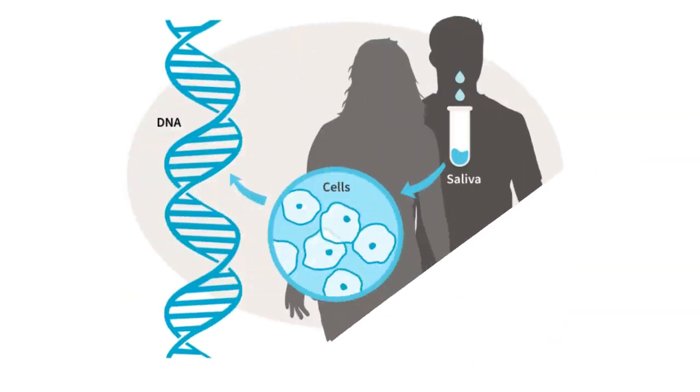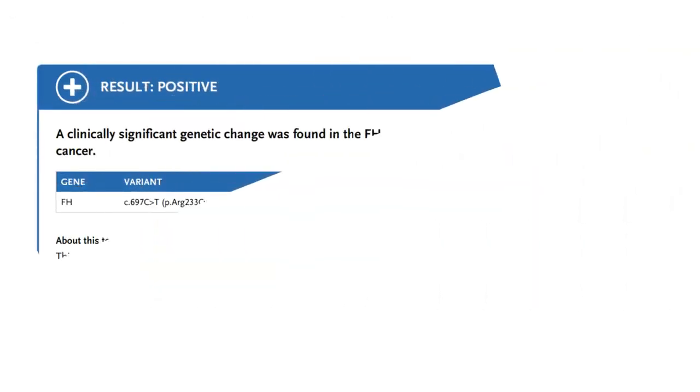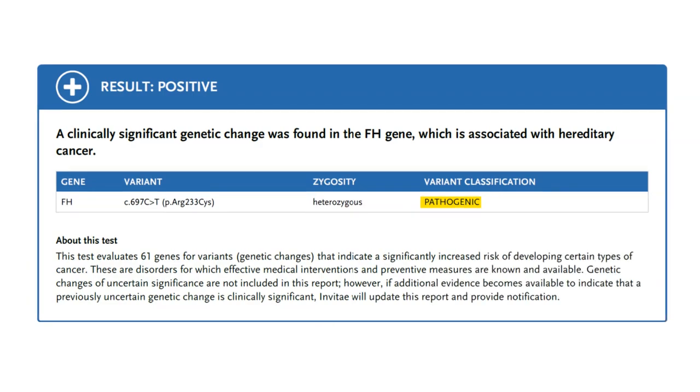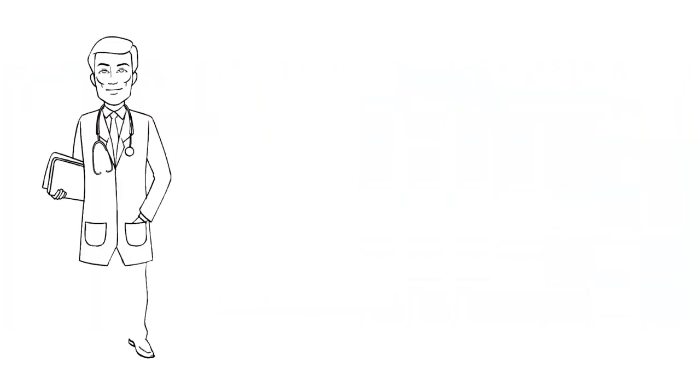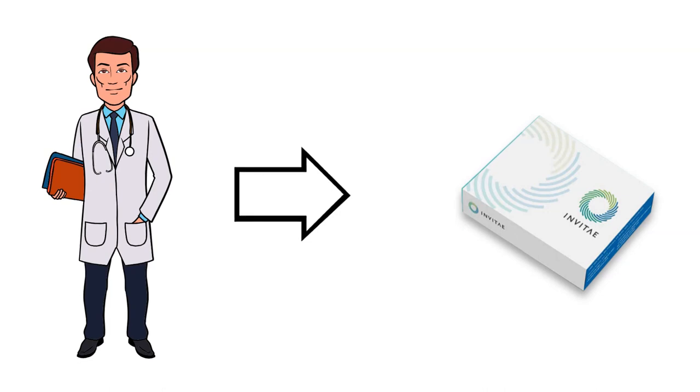Genetic testing of blood or saliva can detect a mutation in the fumarate hydratase FH gene. If a person has a pathogenic mutation in the fumarate hydratase gene, then he or she has HLRCC. Genetic testing can be ordered by a clinician or through direct-to-consumer companies, such as Invitae.